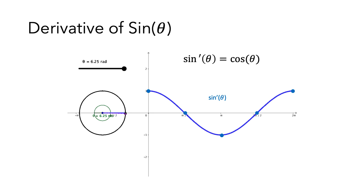Also, if you went back and examined how the length of the adjacent side of the triangle changed in relation to theta, you could compute values for the derivative of cosine of theta, and you'd find that the derivative of cosine of theta is negative 1 times the sine of theta. And now we've seen how to find derivatives for sine and cosine.